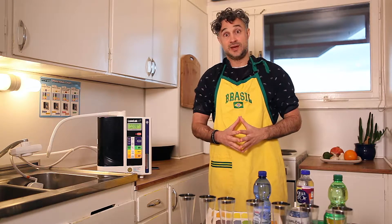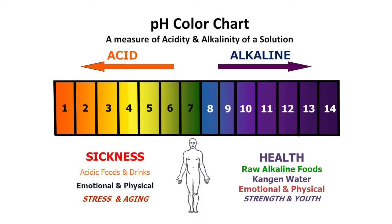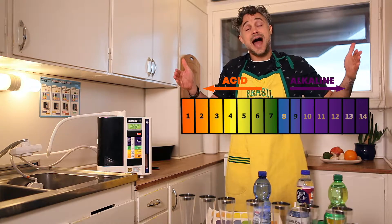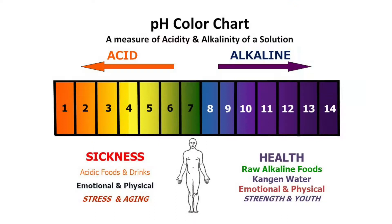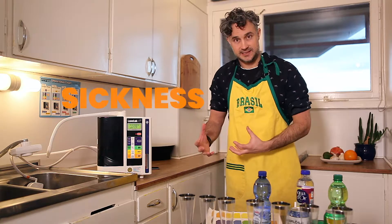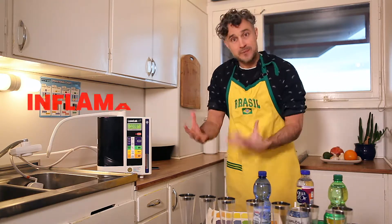Do you want to know what's the difference between an acidic body and an alkaline body? We have a scale from 1 to 14 — that's our pH scale. From 1 to 7 means that our body is acidic. And what does acidic mean? It means that your body is more accessible to sickness; you are more able to get inflammations.